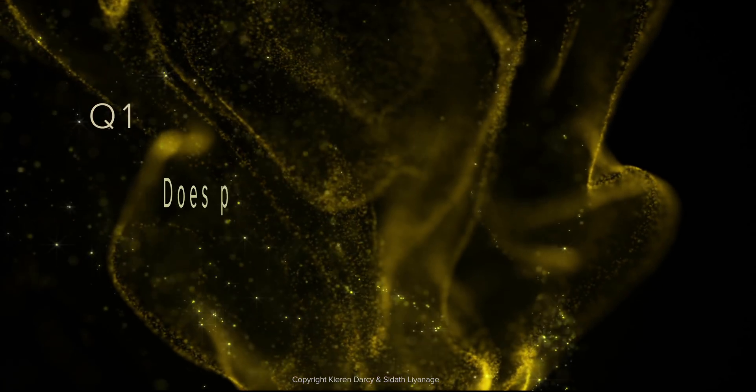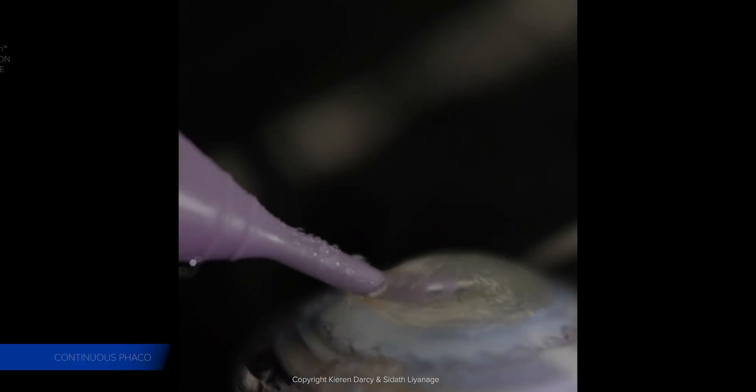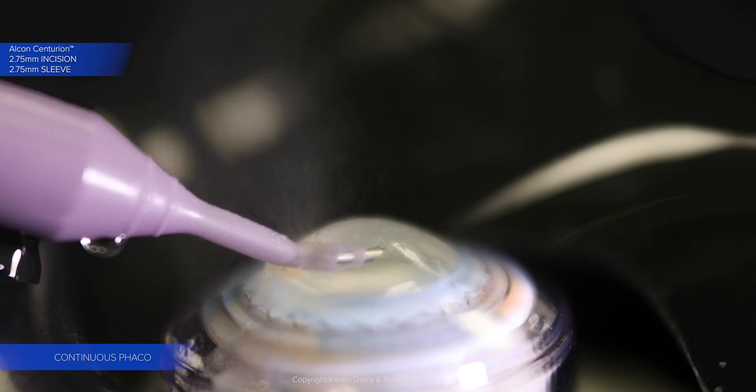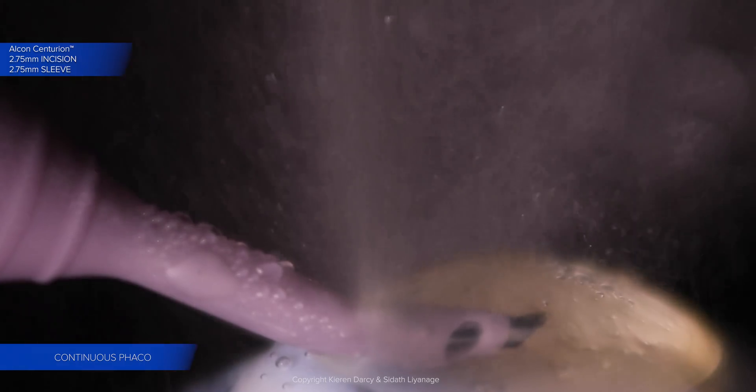Question 1: Does phacoemulsification create aerosols? An Alcon Centurion system is used throughout, here with a 2.75mm incision and sleeve. With the aid of a 4K camera, backlighting and a dark background, the aerosol is clearly visible.